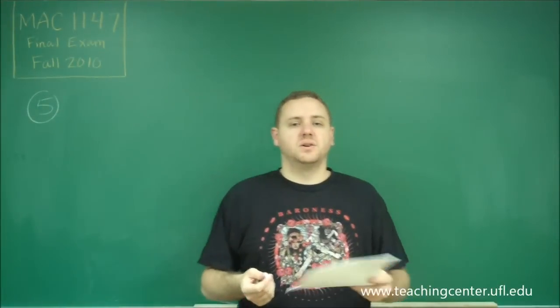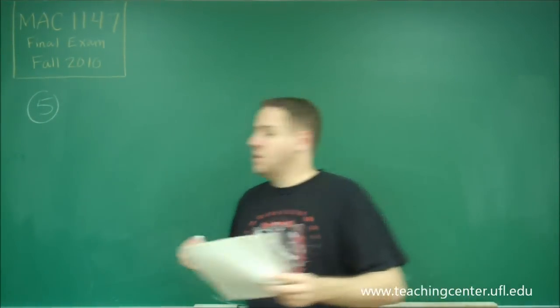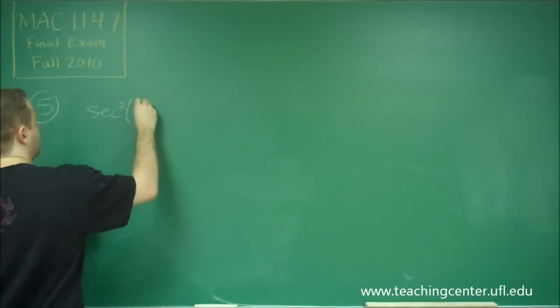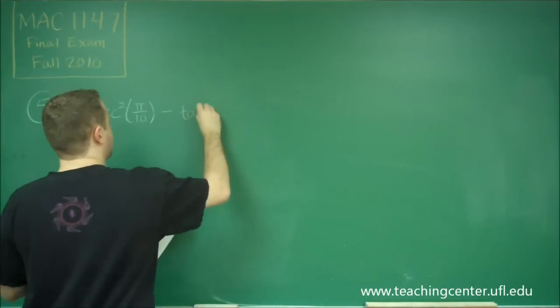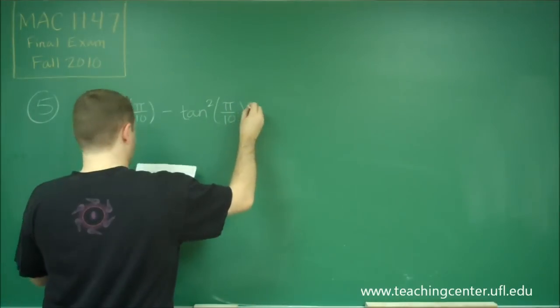Okay, so number five. We need to know our trig identities to answer whether this question is true or false. We have that secant squared of pi over ten minus tan squared of pi over ten is equal to one.